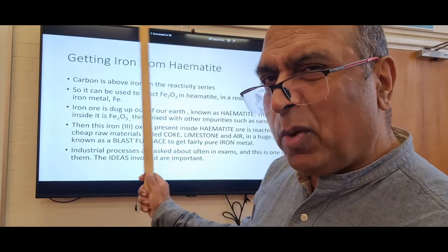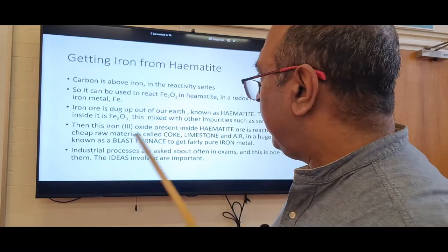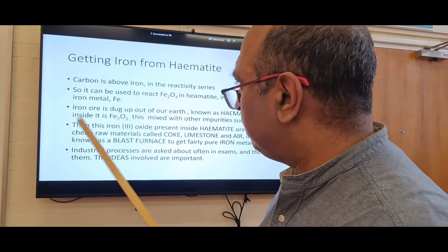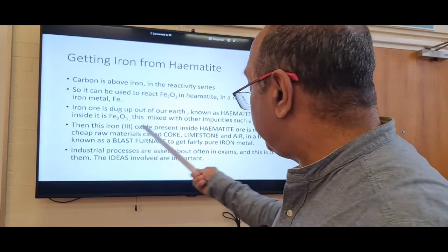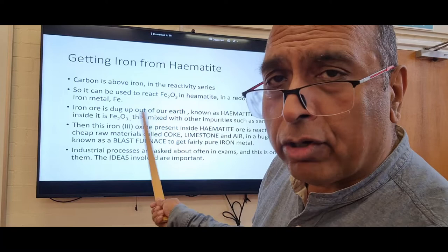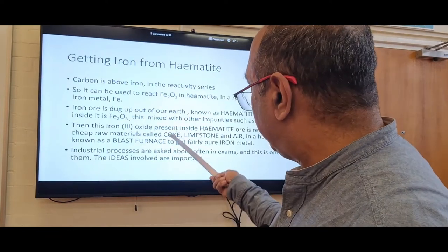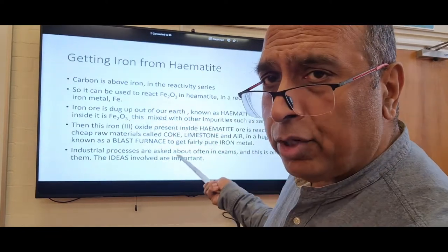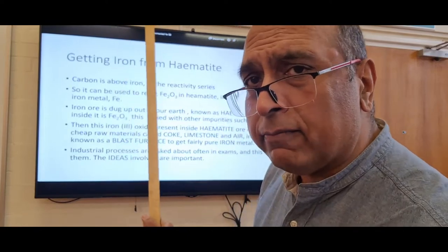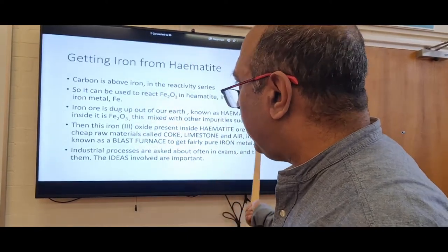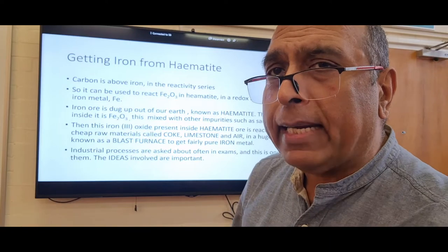The ore contains iron(III) oxide as a compound mixed with unwanted materials like sand. To get the iron out, we heat together coke, limestone, and iron ore (hematite), and blast air in at the bottom. These four things — hematite, coke, limestone, and air — go into the blast furnace, and the reactions that happen inside produce iron from the iron(III) oxide compound found in the ore.